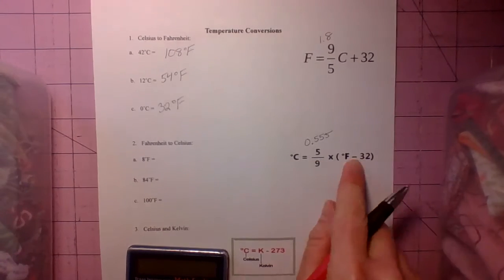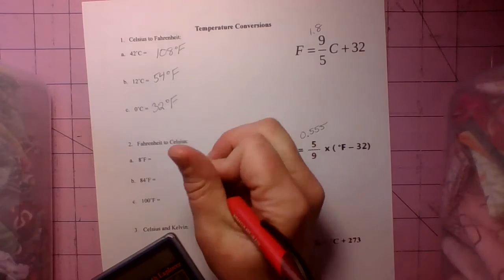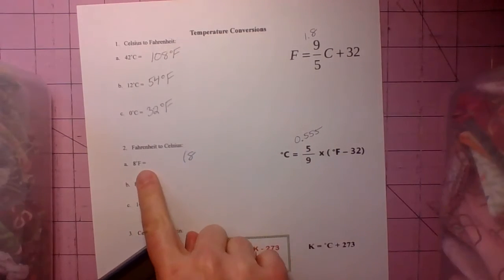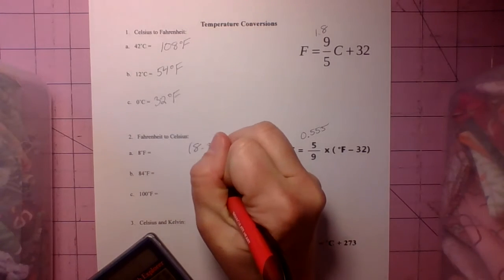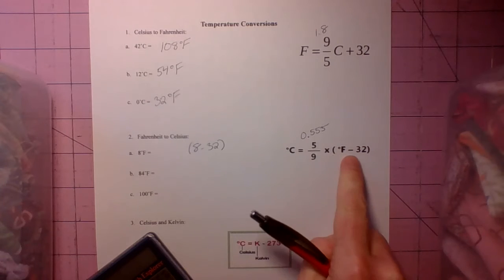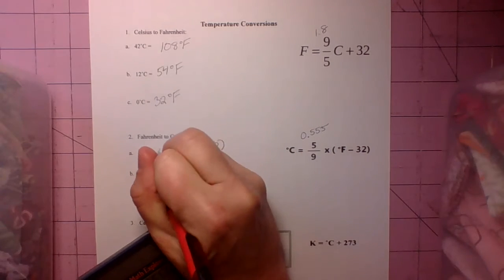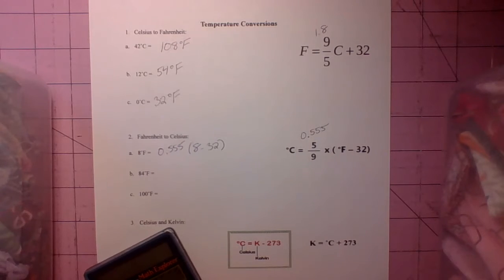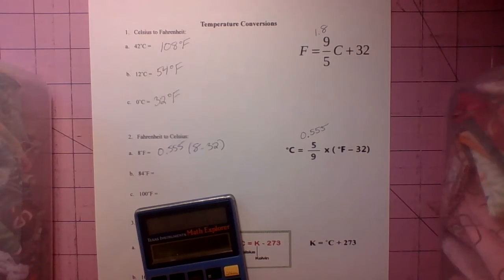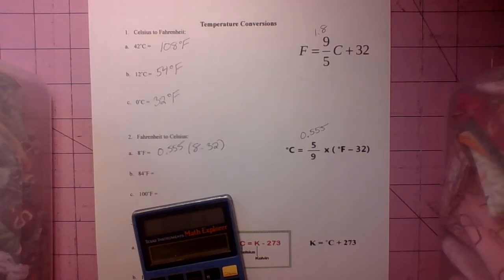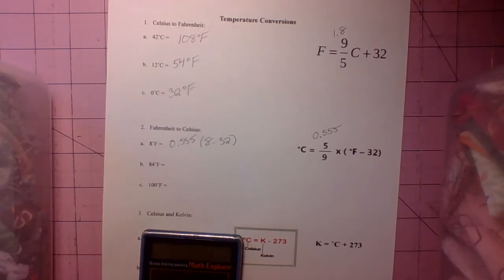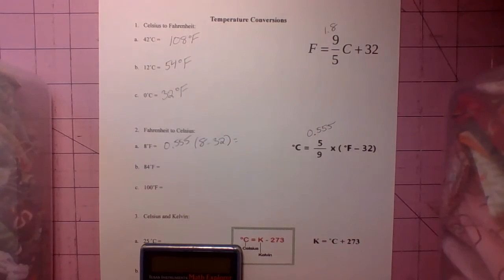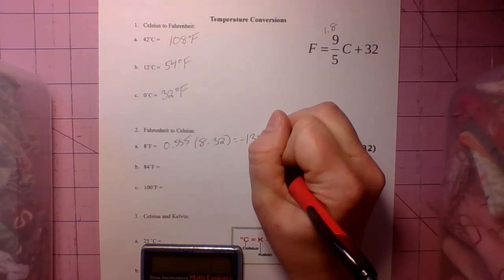So our first Fahrenheit number is 8. So in here, in parentheses, we substitute F for 8. 8 minus 32. And then we multiply whatever that is, times 0.555. So 8 minus 32 equals times 0.555. And we get negative 13.32. And we round it. So that rounds to negative 13 degrees Celsius.